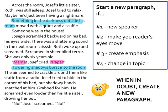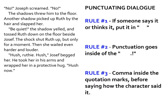Let's look at how we punctuate dialogue, using another excerpt from Alan Gratz's novel — just right afterwards, with a bit more dialogue. "No!" Joseph screamed. The shadows threw him to the floor. Another shadow picked up Ruth by the hair and slapped her. "Be quiet," the shadow yelled, and tossed Ruth down on the floor beside Joseph. The shock shut Ruth up, but only for a moment. Then she wailed even harder and louder. "Hush, Ruthie, hush," Joseph begged her. He took her in his arms and wrapped her in a protective hug. "Hush now."